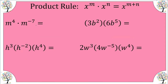We have m to the fourth times m to the negative seven. Let's just apply the rule — we're going to add four and negative seven, and we get negative three. Remember, we can't leave a negative exponent, so we're going to move the factor of m to the negative third to the denominator, making our exponent positive, and put a one in the numerator.